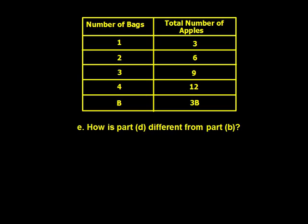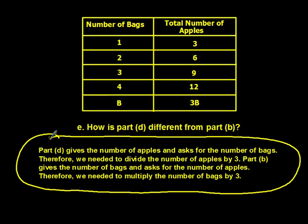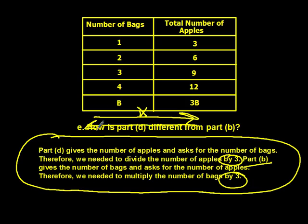Now let's look at parts D and B. Letter E asks how part D is different from part E. Part D gives us the number of apples and asks us to find the number of bags — therefore we needed to divide the number of apples by three. Part B gave us the number of bags and asked for the total number of apples — therefore we needed to multiply the number of bags by three. Going one way, we multiply; heading back the other way, we divide.